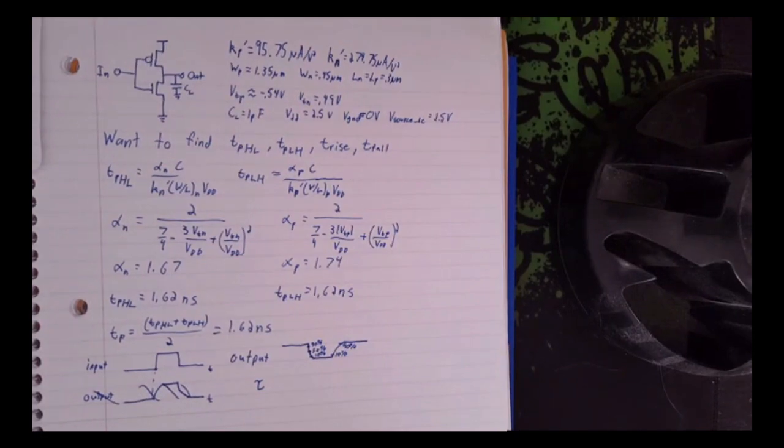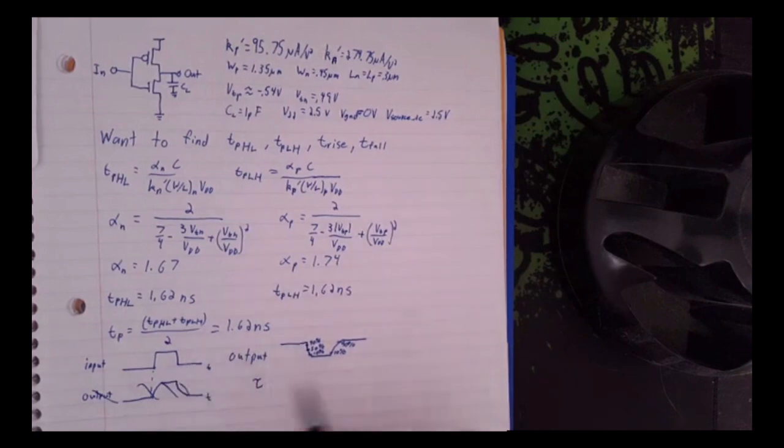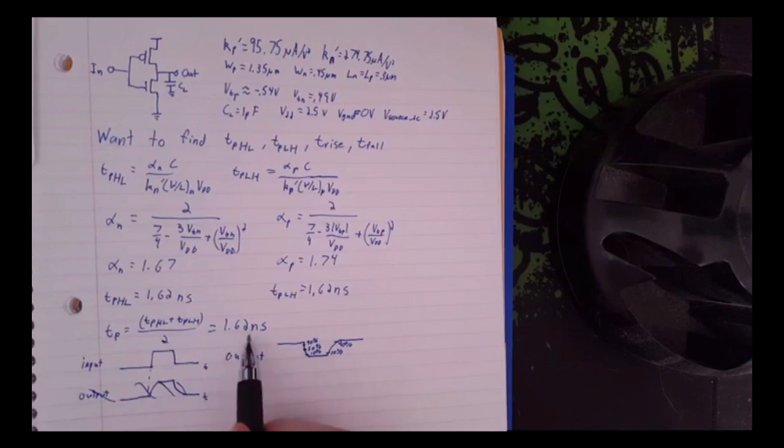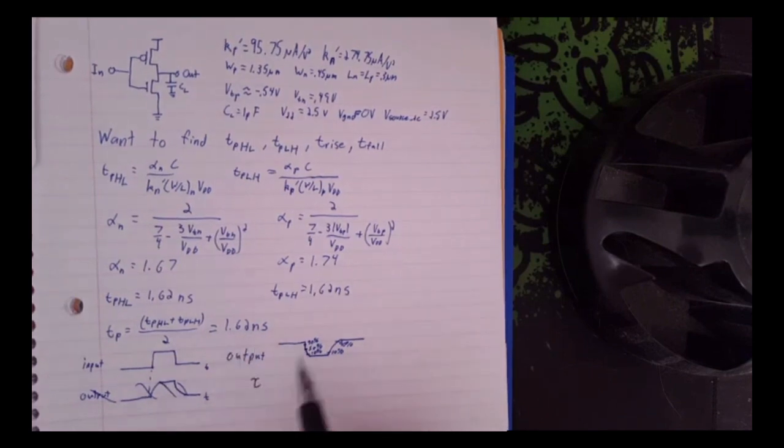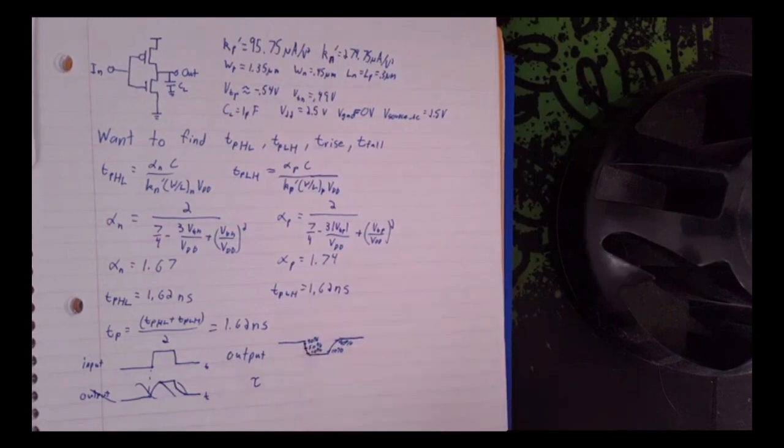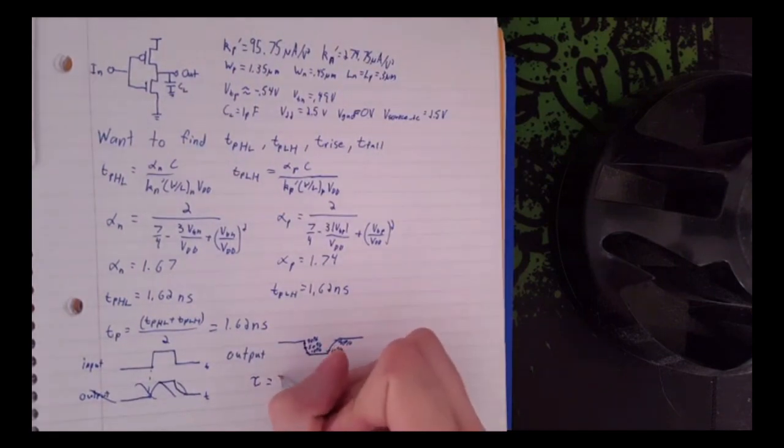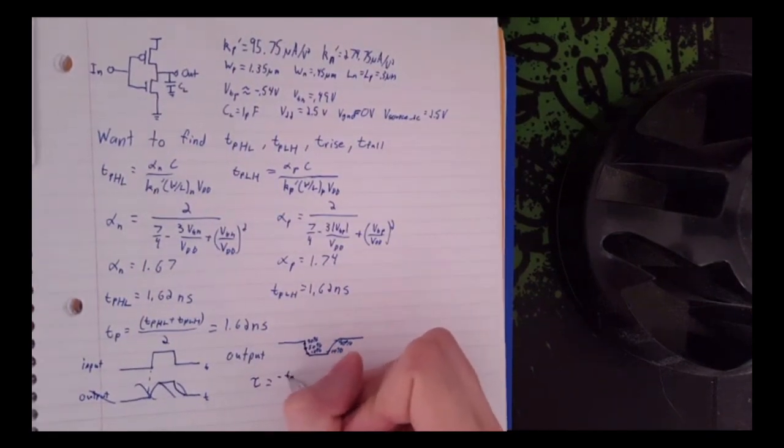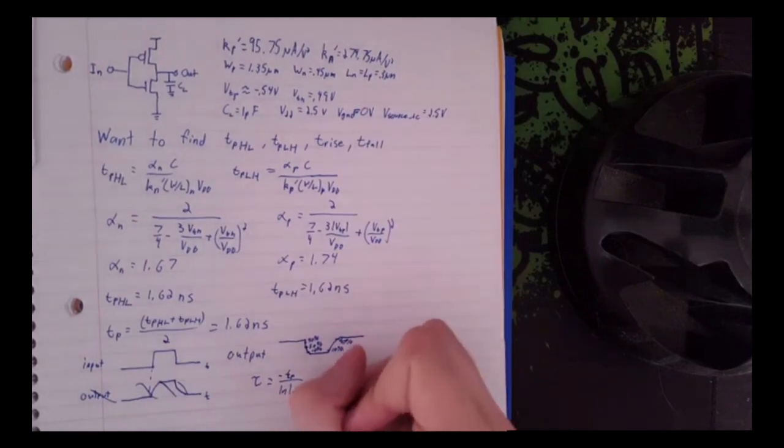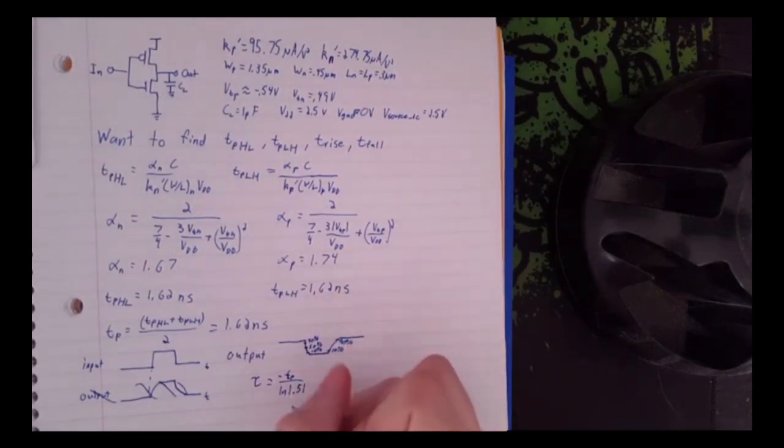And so if you remember from prior classes, you can calculate tau of an exponential based on some known time. In this case, we know that at 50%, it's going to be 1.62 nanoseconds after 0, or 100% in this case. So we can say that tau is equal to negative TP because we're going from high to low, and to make the units work out, the ln of 0.5.